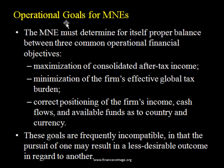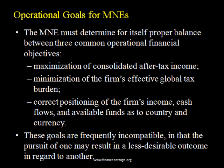The next topic is the operational goals of multinational enterprises. There could be three goals or objectives: first, maximization of consolidated after-tax income; second, minimization of the firm's effective global tax burden; and third, correcting the position of the firm's income, cash flows, and available funds as to country and currency. However, these three goals are frequently incompatible — pursuing one may result in a less desirable outcome for another. For example, increasing income may also increase your tax burden. Achieving all three simultaneously is therefore a critical challenge for the management of a multinational enterprise.